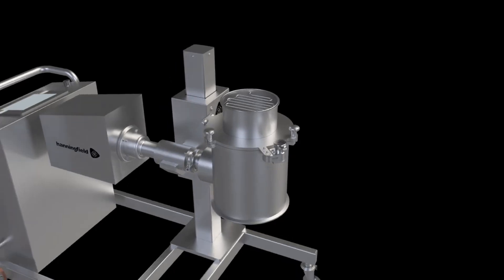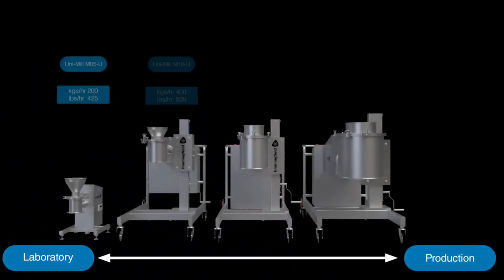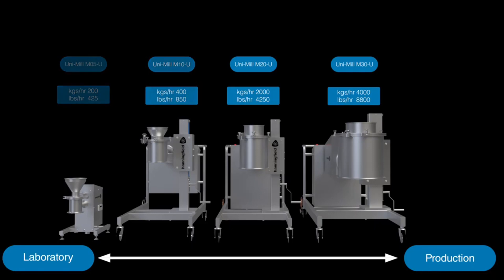The Unimill is available in various sizes to satisfy a wide range of applications from small-scale laboratory through to high-capacity production. Importantly, a consistent tip speed means results are scalable between each size of machine.